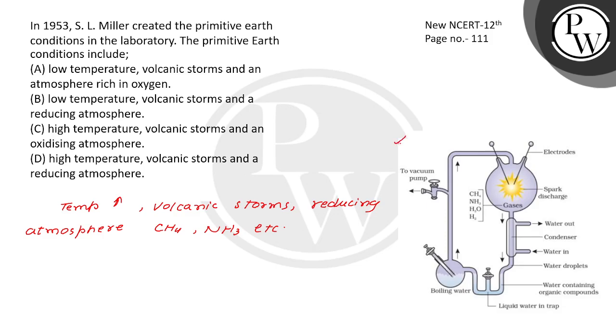Like you can see here, they put a spark discharge here. Electric discharge was created in a closed flask. And here, methane, hydrogen, and water vapor were present at 800 degree temperature, very high temperature. They took 800 degrees Celsius.